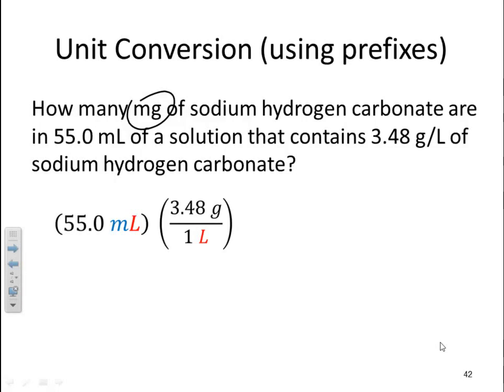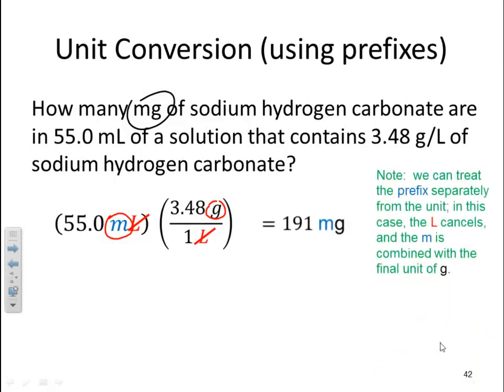However, I got milliliters and I have liters. Well, remember we said earlier that I can just basically cancel the liters and not worry about the prefix and leave the prefix there. So my liters cancel and I'll leave my milli here. I didn't cancel that. And I have grams here. So all I do is put the two units together after I multiply the 55.0 and the 3.48 and I get 191 milligrams. Now we can treat the prefix separately from the unit. In this case, the liters cancel and the milli is combined with the final unit of grams. So we can just get rid of the base unit and keep that prefix and move it. That makes life easier as we're doing calculations.